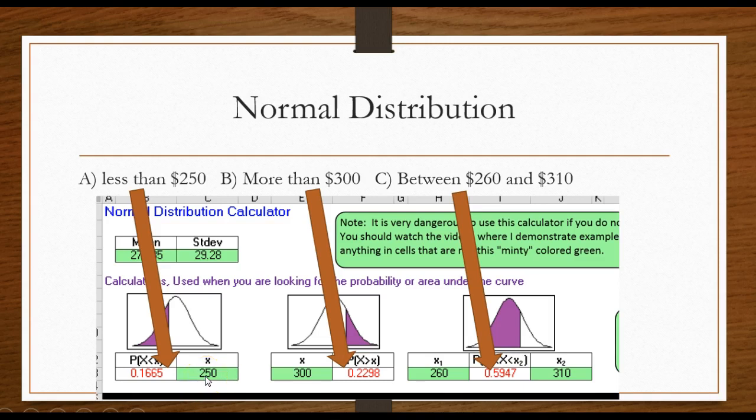Like on the first one here, probability that it's less than $250, after putting in my mean and standard deviation I would enter a 250 here. Make sure you hit the enter key anytime you put anything in a cell.